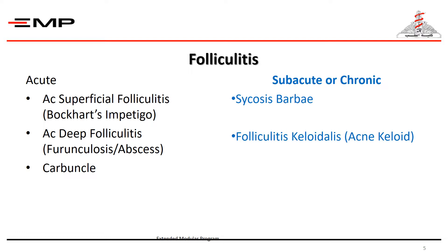Folliculitis is divided into acute and subacute or chronic. The acute may be superficial, as in acute superficial folliculitis of Bockhart — also known as Bockhart's impetigo — who was the first to describe it. There is also acute deep folliculitis, the most common form, also known as furuncle, boils, or abscess, and the carbuncle, which is contiguous infection of hair follicles. Subacute or chronic folliculitis includes sycosis barbae and folliculitis keloidalis (acne keloid), also known as folliculitis keloidalis Nuchae.